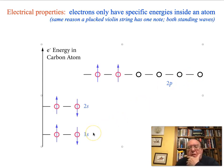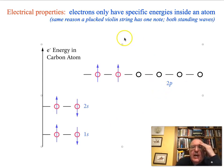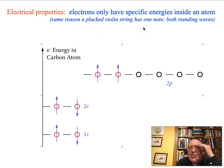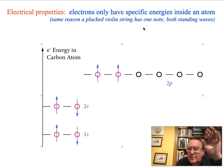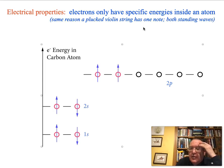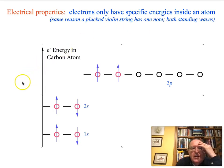These specific energies — the 1s, the 2s, and the 2p — are very specific energies, for the same reason that a plucked violin string has one note. One can describe the electrons inside of an atom as a standing wave, just like you can describe a violin string as supporting a standing wave with one energy or one note. We'll get into that later when we talk about sound.